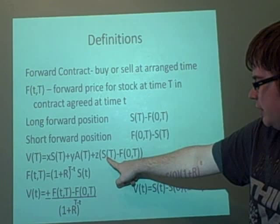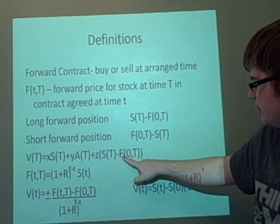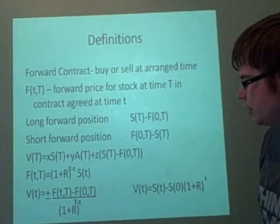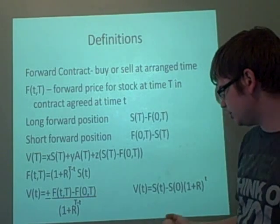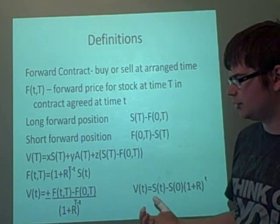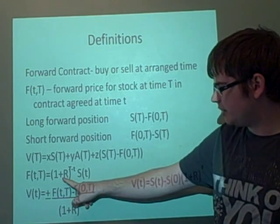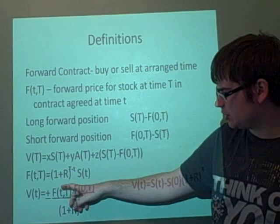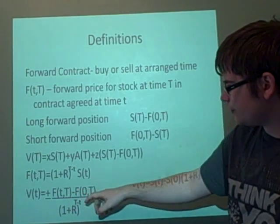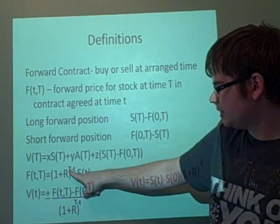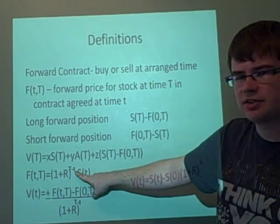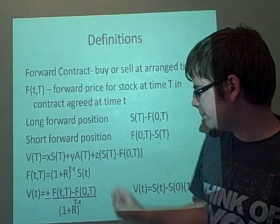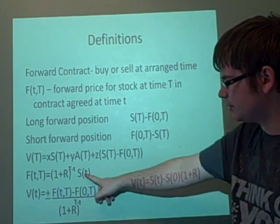So we've got S(T) minus the Forward Contract. If we're going to get a rate of return on, say, a Stock or Bond, we'll call this R, then we have to include this as well. So we have (1+R) to the power big T minus little t times the Stock Price.